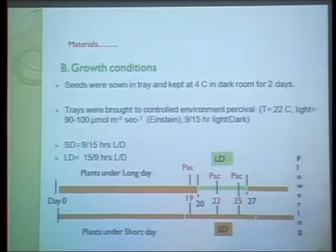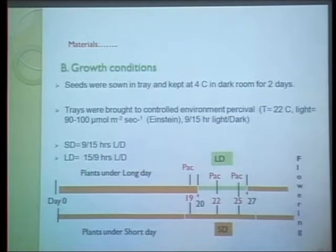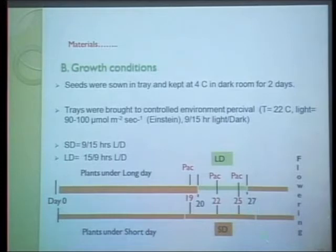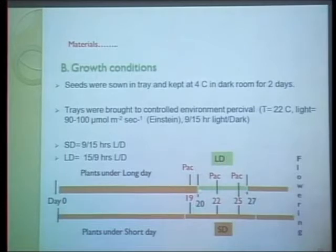Short day means 9 hours light and 15 hours dark; long day means 15 hours light and 9 hours dark. Plants under short days were kept in short day conditions throughout the experiment until flowering. Plants under long day were kept in long days for only one week, from 20 to 27 days. Paclobutrazol treatment was applied on days 19, 22, and 25.